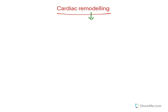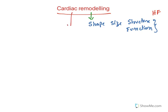Cardiac remodeling — we need to understand this term. Heart failure majorly results in cardiac remodeling, which means there is a change in shape, size, structure, as well as function of the heart. The heart's size, shape, structure and function are altered, and this again aggravates the heart failure condition. So these adaptations are bad and hence they are known as mal-adaptations — mal-adaptation of the heart, which results in cardiac remodeling.